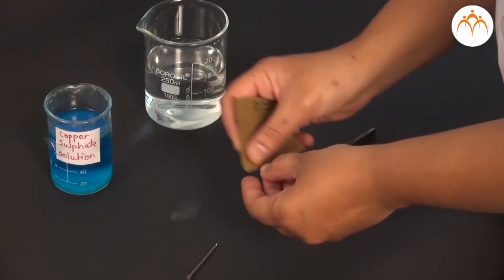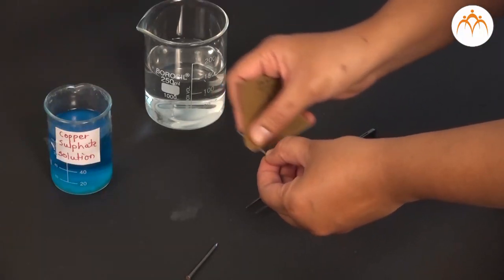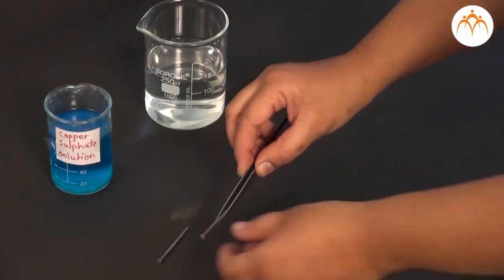Displacement reaction: Reaction of copper sulphate solution on iron nails. Take iron nails, free from rust. Clean it with sand paper and wash with water.